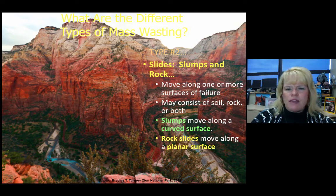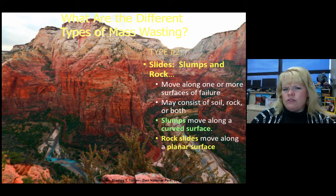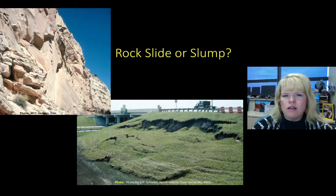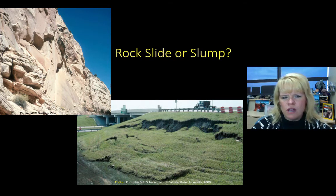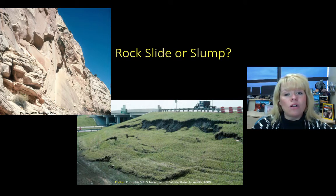Slides and slumps are another type of mass wasting. Looking at Zion National Park, this picture would more likely contain a slide as opposed to a slump. The one on the left is the slide because you can see that nice flat planar surface. The slump is where material will eventually break open and fall into the highway — we have a number of those situations that have occurred in our central Texas region.